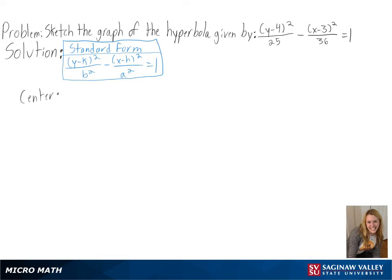We first need to find the center of the hyperbola. We can see here that h is equal to 3 and k is equal to 4, so our center will be 3, 4.